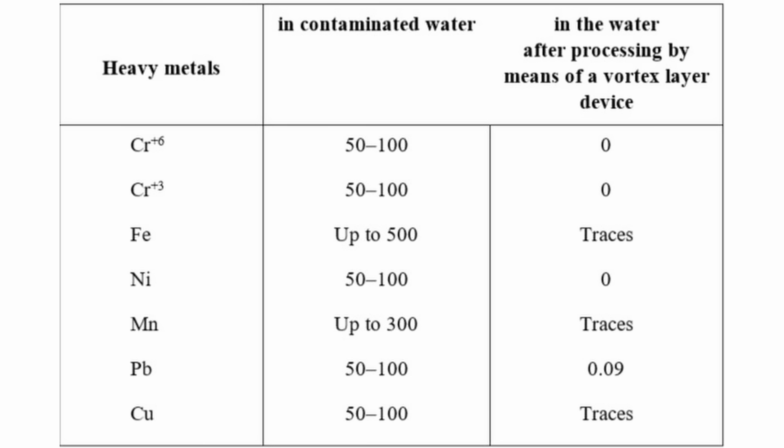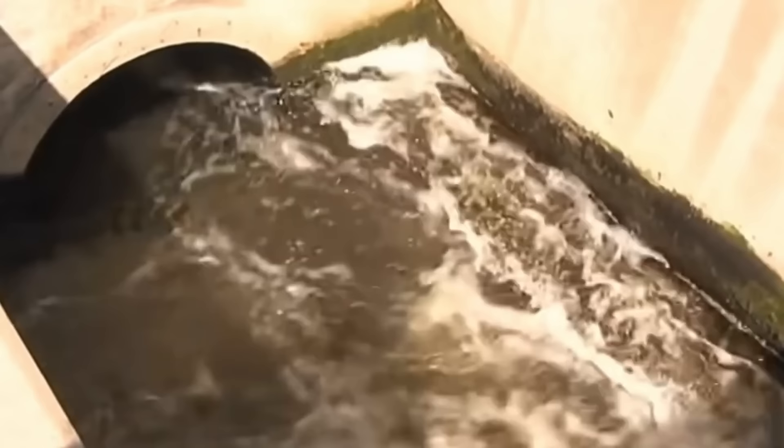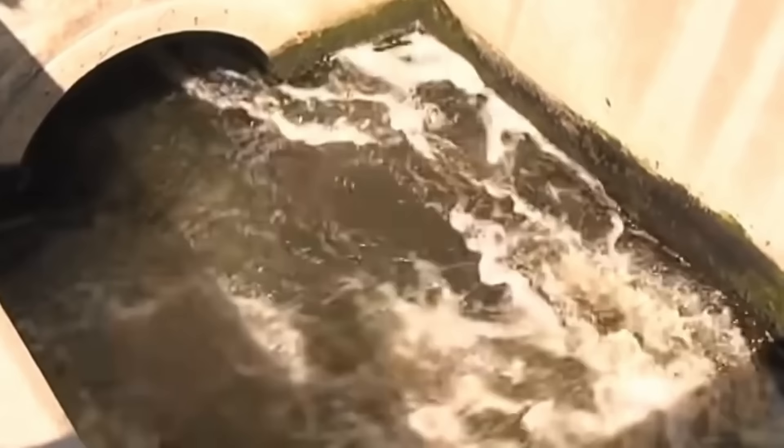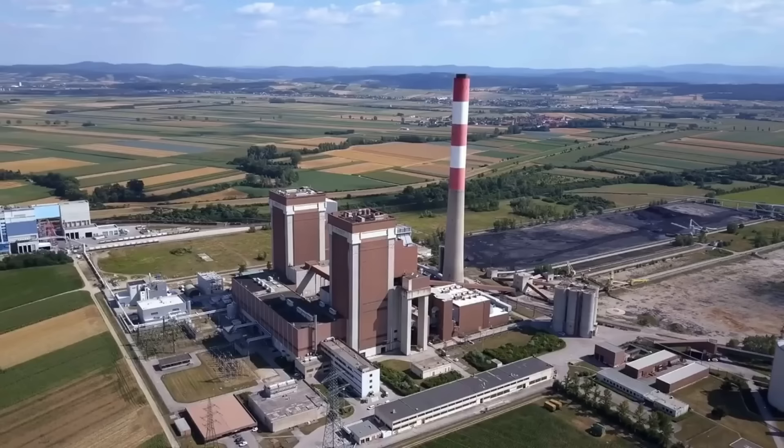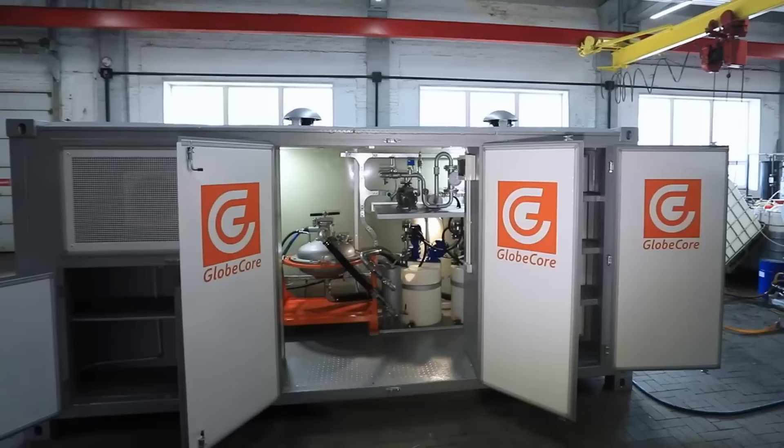As a result, the properties of processed substances change. Furthermore, due to magnetization, solid particles deposit 1.5 to 2 times faster than after treating electroplating industry sewage by other methods. A typical example of electroplating industry sewage treatment by means of AVS is shown in the table.